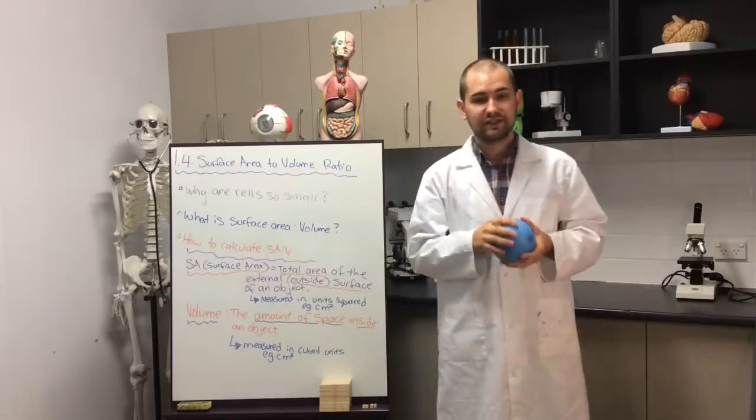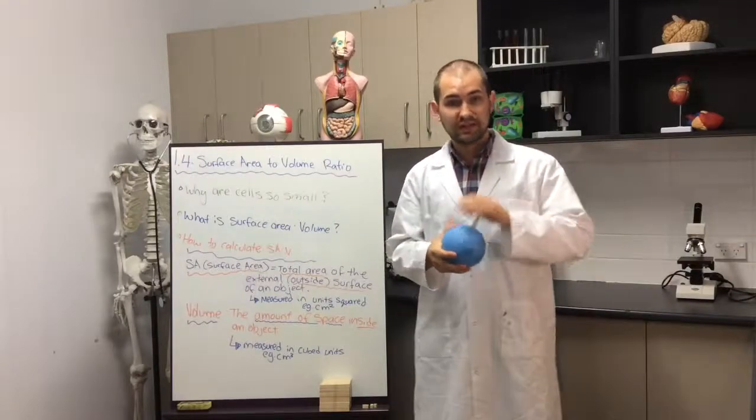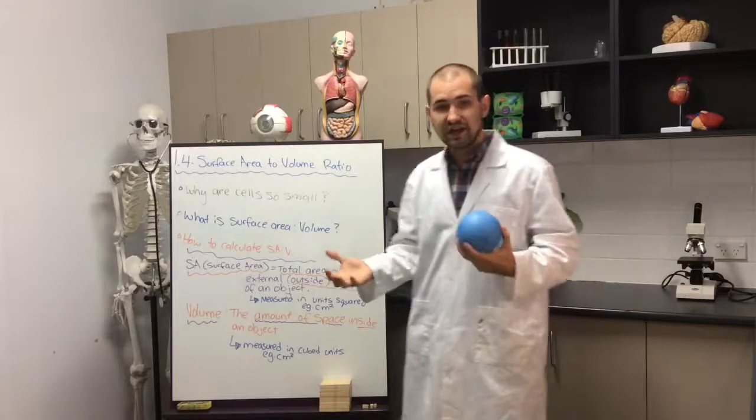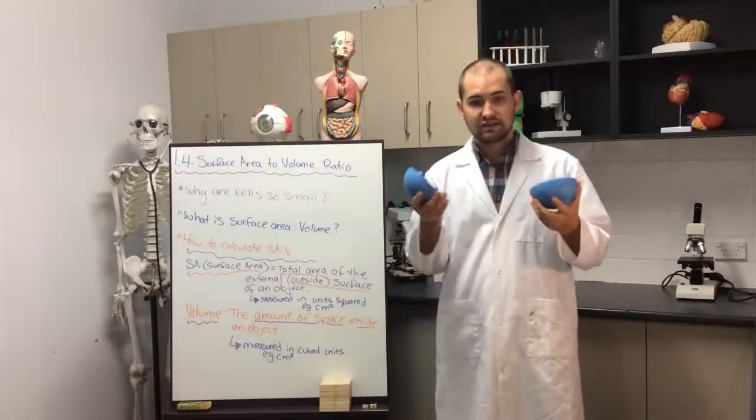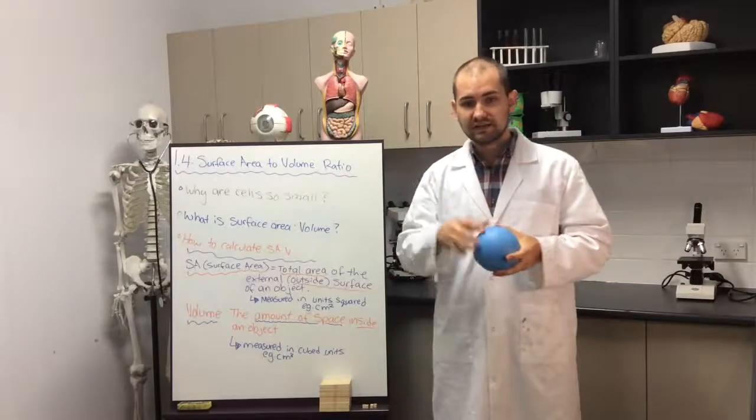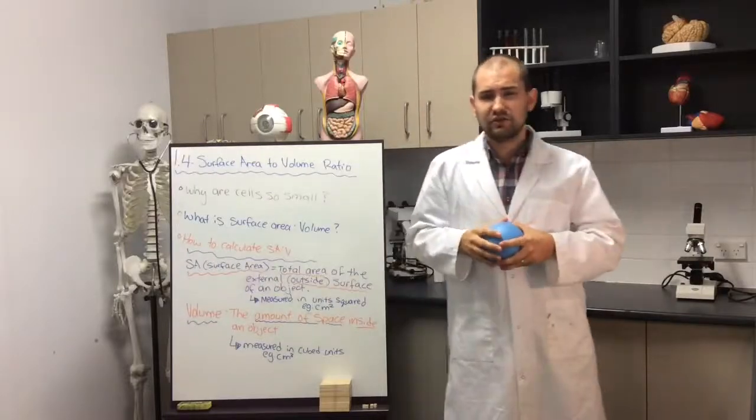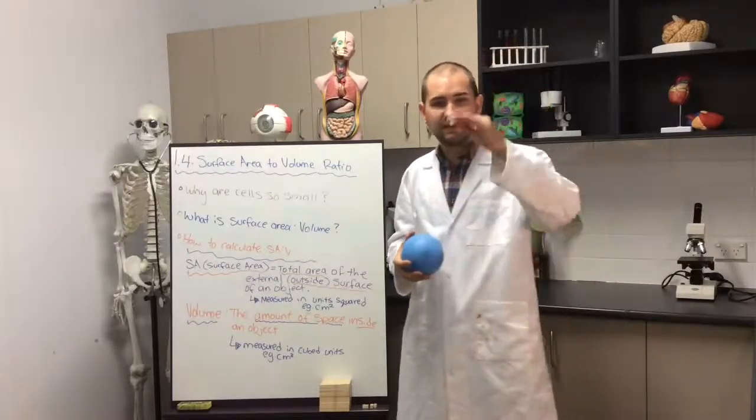So a cell needs a really high rate of gas exchange, so that's why they need a really large surface area. The space inside of a cell is called the volume. So the space inside is the volume. Volume we measure in units cubed, so things like centimeters cubed.